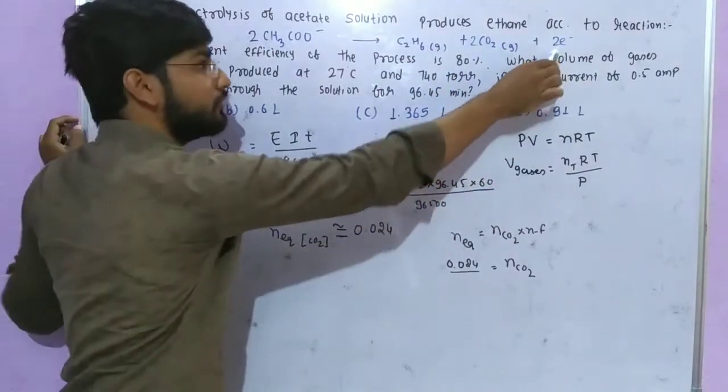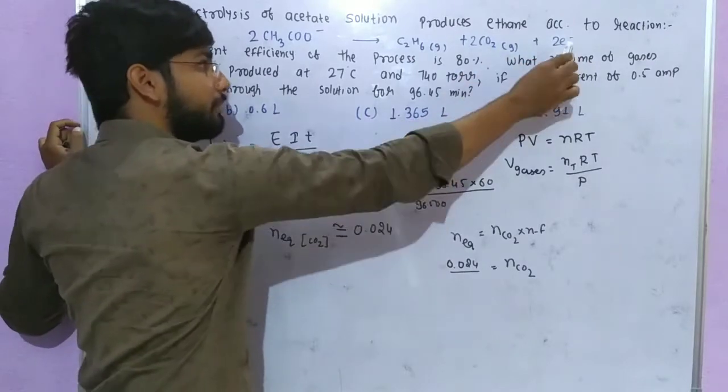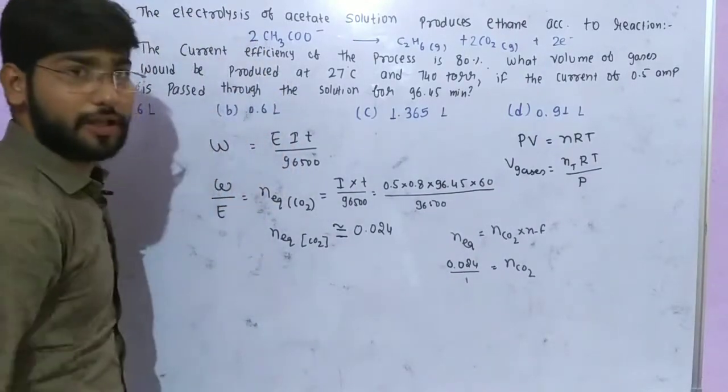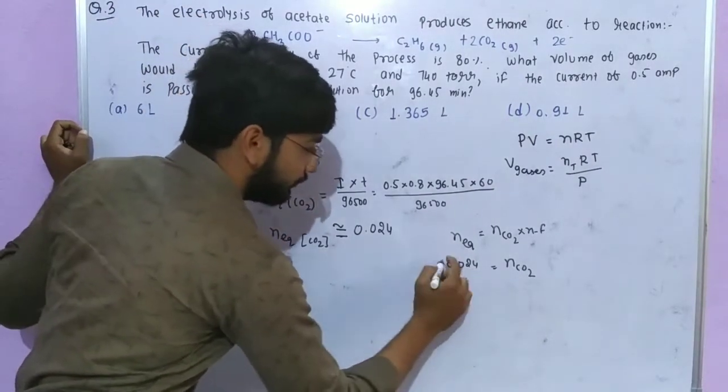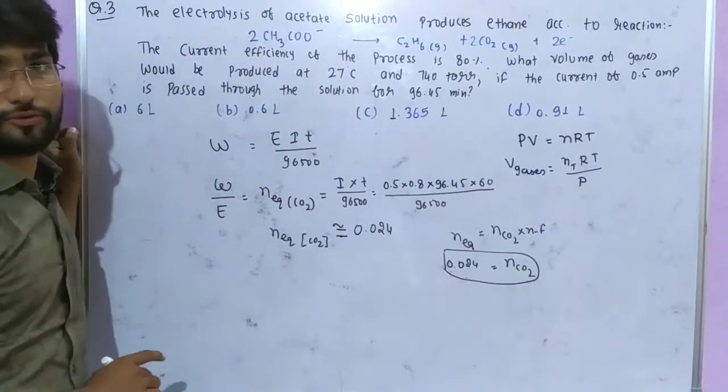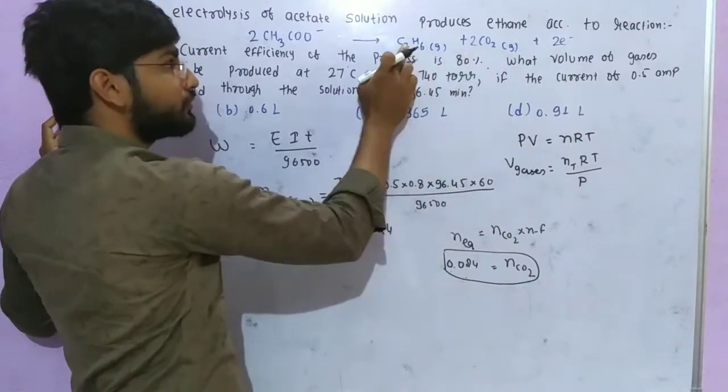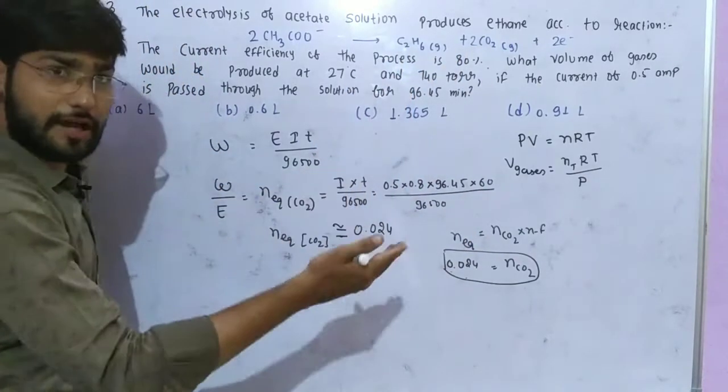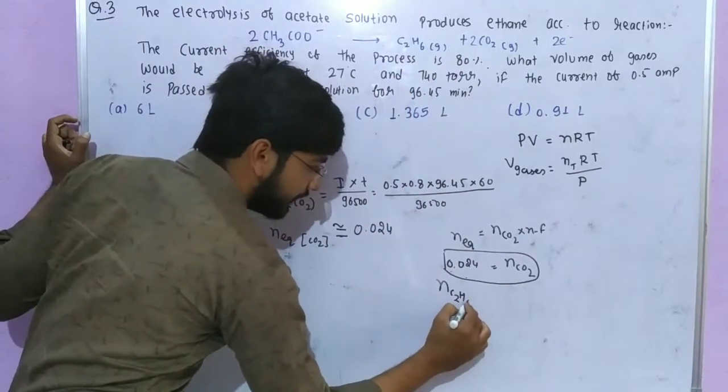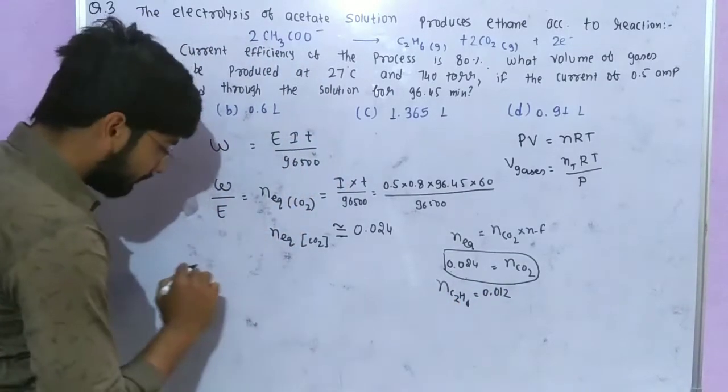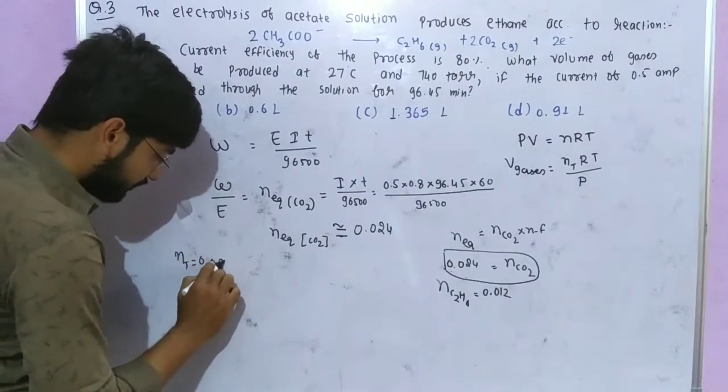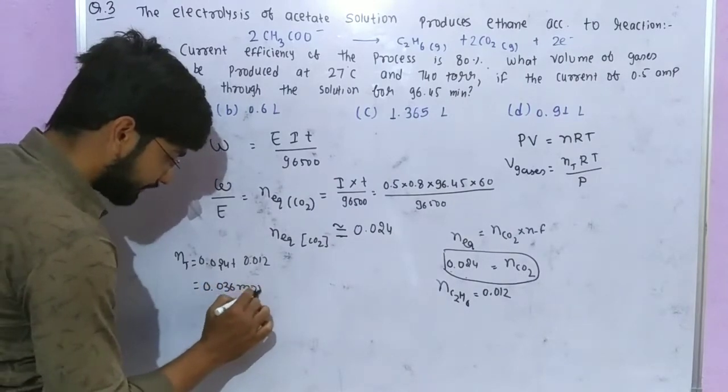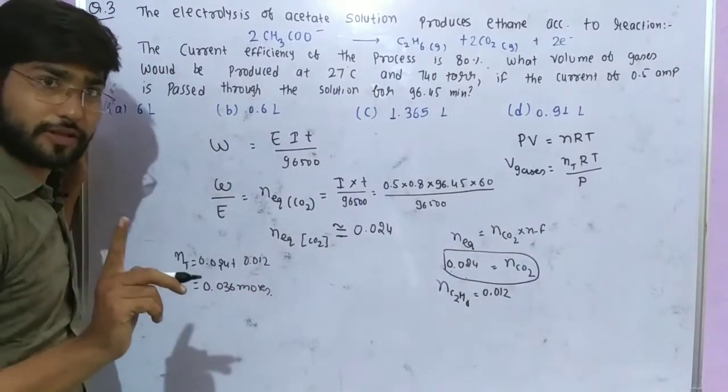From the reaction, two electrons are needed to produce one CO2 molecule, so n-factor is 2. Moles of CO2 equals 0.024 divided by 2 equals 0.012. For ethane, n-factor is also 2, so 0.024 divided by 2 gives 0.012 moles of ethane. Total number of moles is 0.024 CO2 plus 0.012 ethane equals 0.036 moles total.